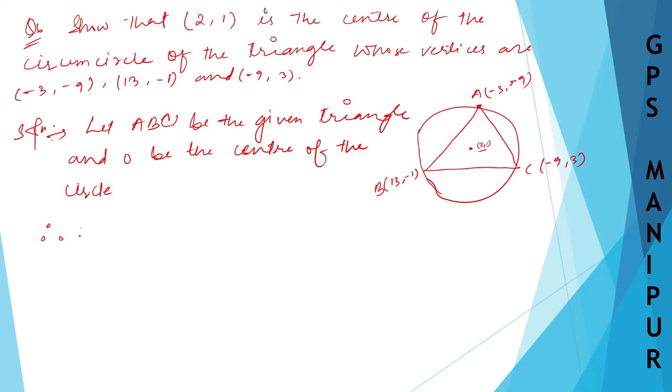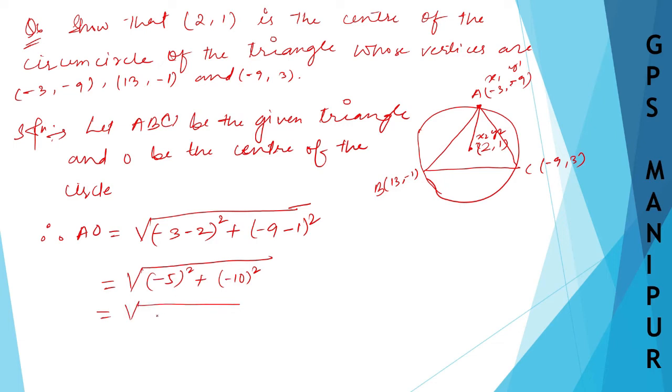Therefore AO—so this is X₁Y₁ and this is X₂Y₂ (2,1). AO equals √[(X₁−X₂)² + (Y₁−Y₂)²]. I hope by now you know the formula. So AO = √[(−3−2)² + (−9−1)²] = √[(−5)² + (−10)²] = √[25 + 100] = √125.